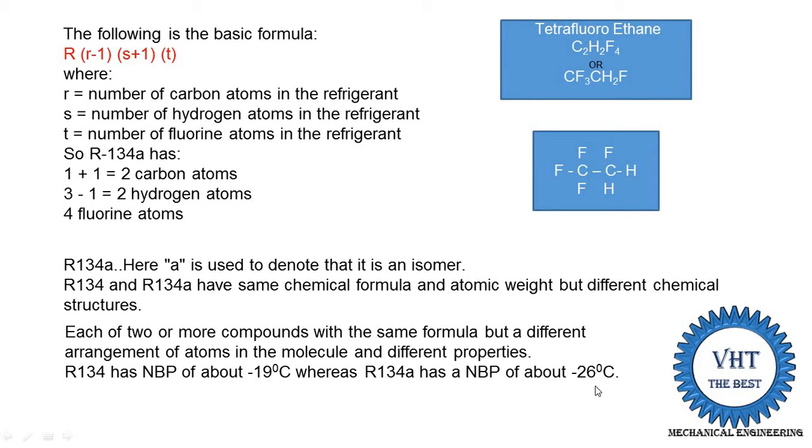So, R134a indicates an isomer. When the isomer designation is added, the chemical formula is the same, but the arrangement of atoms in the structure is changed. When the arrangement changes, it changes the properties of the refrigerant, such as the boiling point temperature.